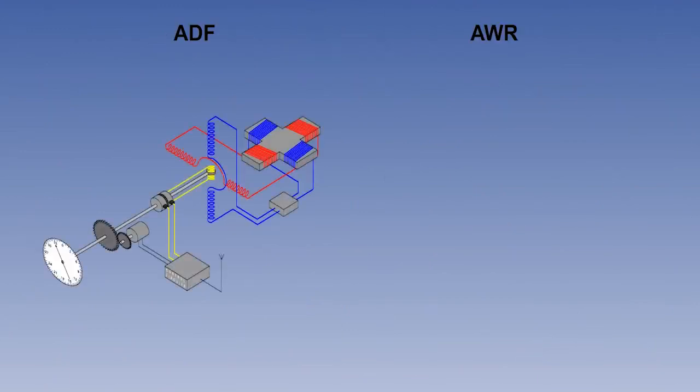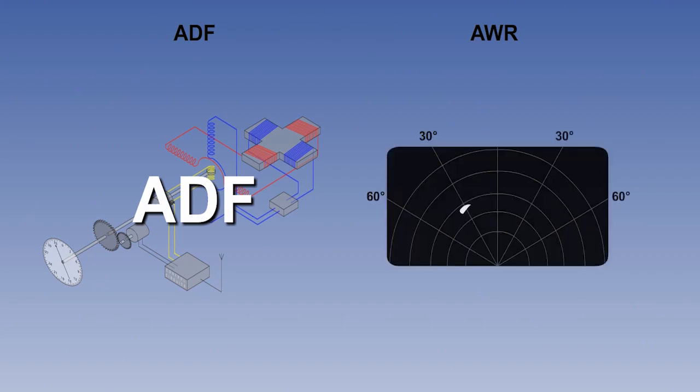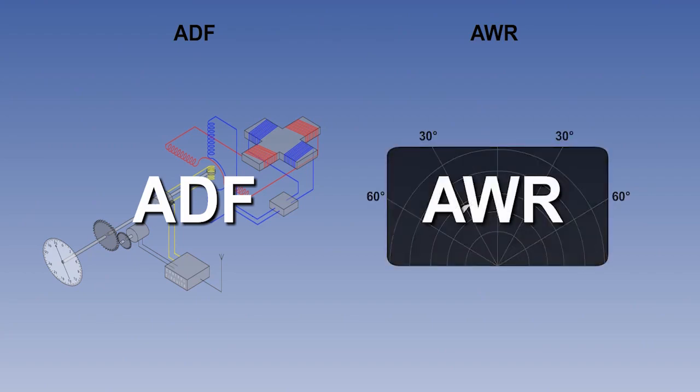However, there may be a problem if the bearing is measured at the aircraft. The two navigational aids to consider here are NDBs, which are non-directional beacons, which provide a signal to the ADF, automatic direction finders, in our aircraft, and airborne weather radar.